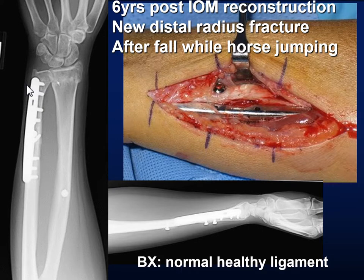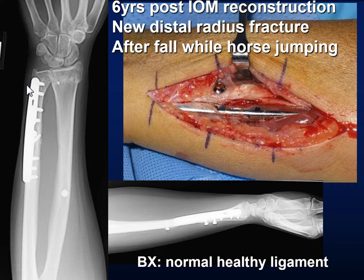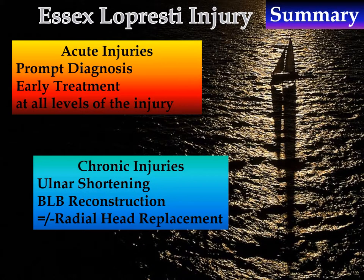Along the way, we had a unique opportunity to examine the fate of the bone-ligament-bone graft. A 38-year-old woman, 6 years post-IOM reconstruction, sustained a new distal radial fracture while horse-jumping. At the time of her ORIF of the distal radius fracture, we removed her ulnar shortening plate and biopsied the bone-ligament-bone graft. The biopsy was indistinguishable from normal ligament. In summary: for acute Essex-Lepresti injuries, prompt recognition and early treatment of all three levels of injury will yield excellent results. In the chronic injury, ulnar shortening osteotomy and bone-ligament-bone graft reconstruction will provide a satisfactory outcome.